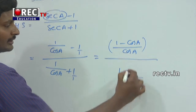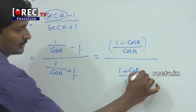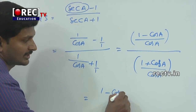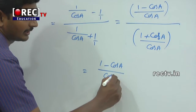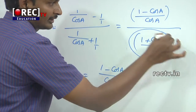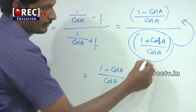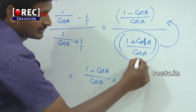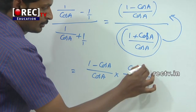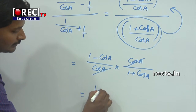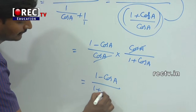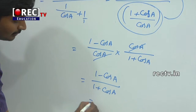We then write the reciprocal to convert the division, giving (1 - cos a) / cos a multiplied by cos a / (1 + cos a). The cos a terms cancel, leaving (1 - cos a) / (1 + cos a), which equals the RHS. Hence proved.